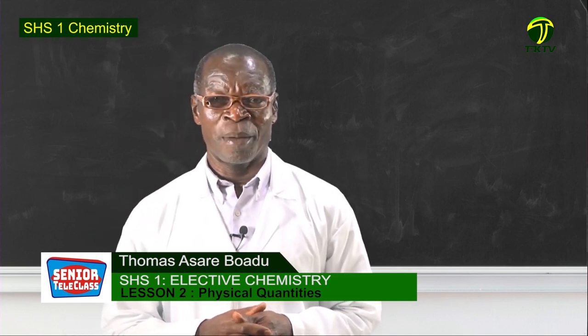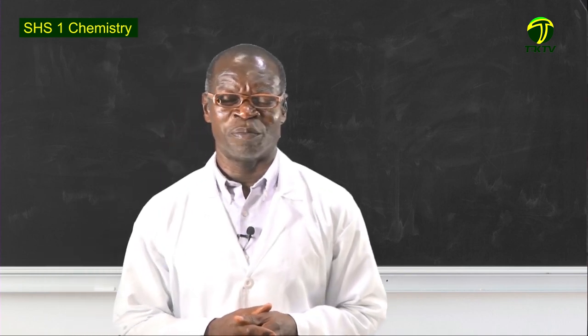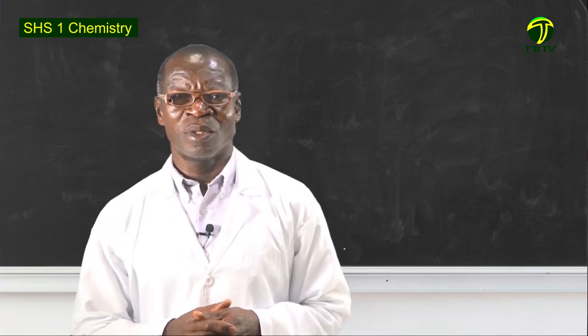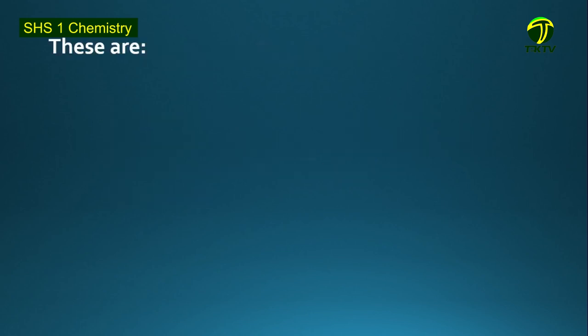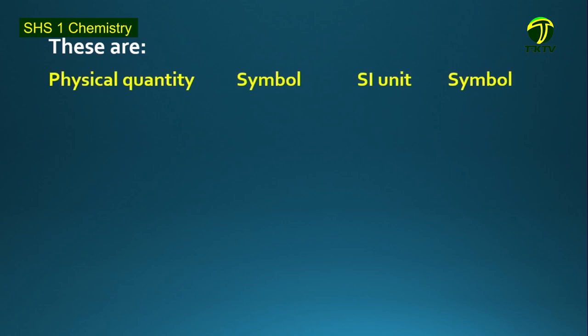When we talk about basic physical quantities, what are these? They are considered as basic because they do not depend on anything. The first basic physical quantity is length, with the symbol L. The SI unit used to measure length is meter, with its symbol small m.